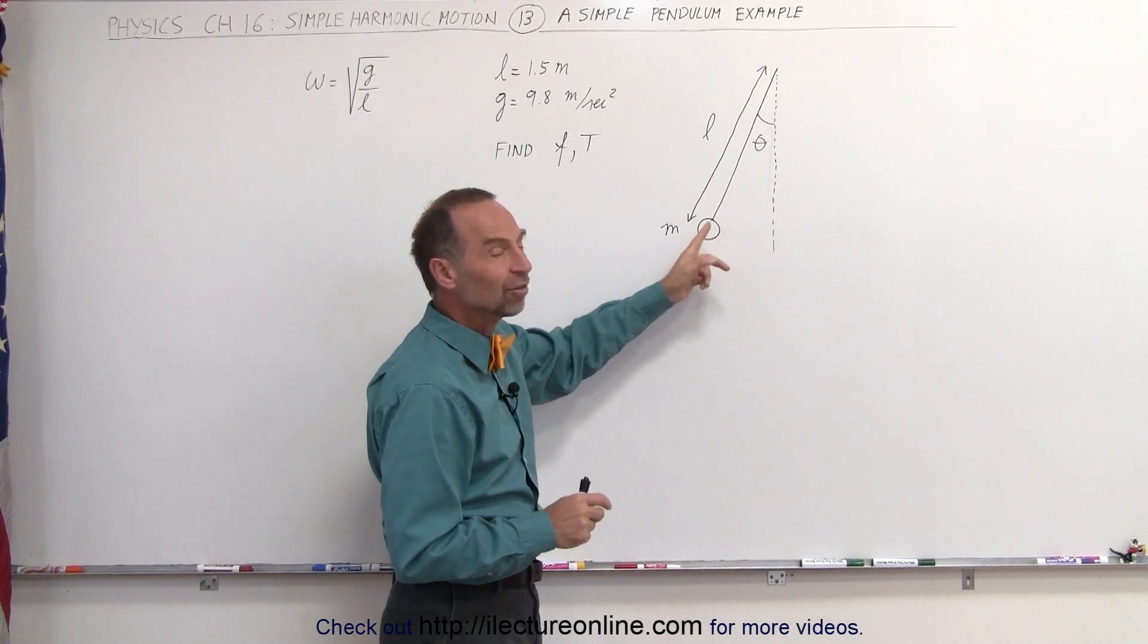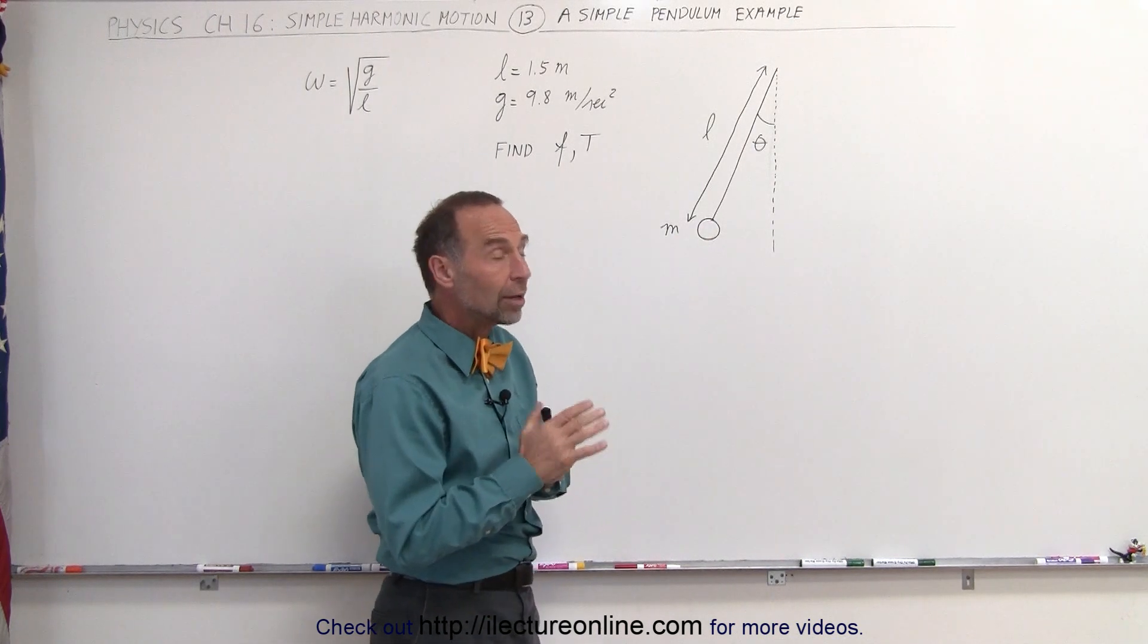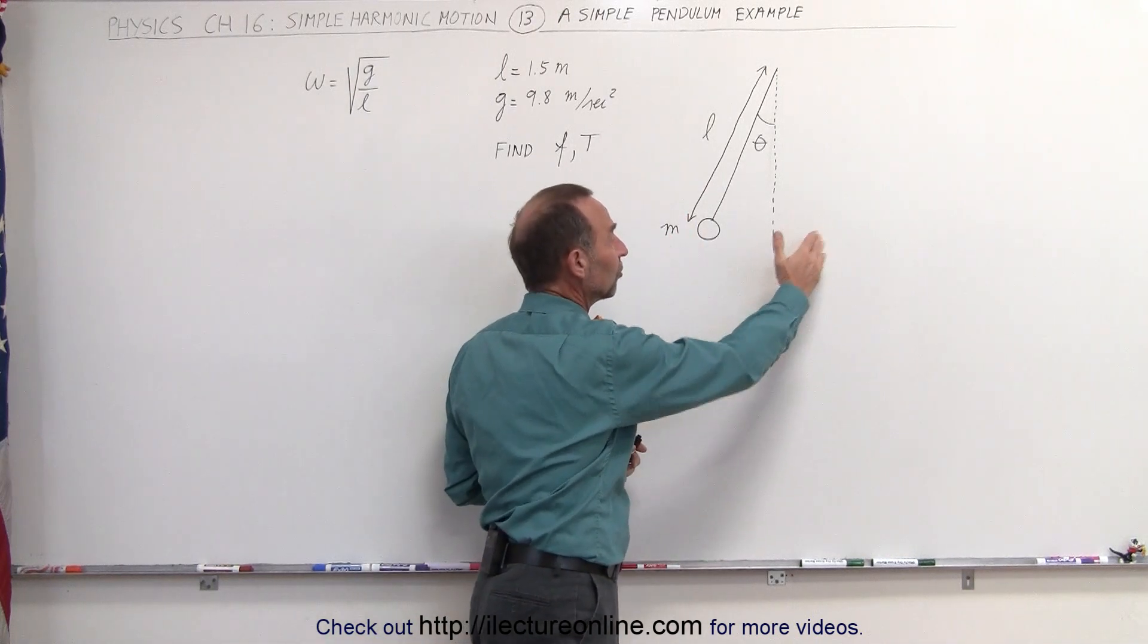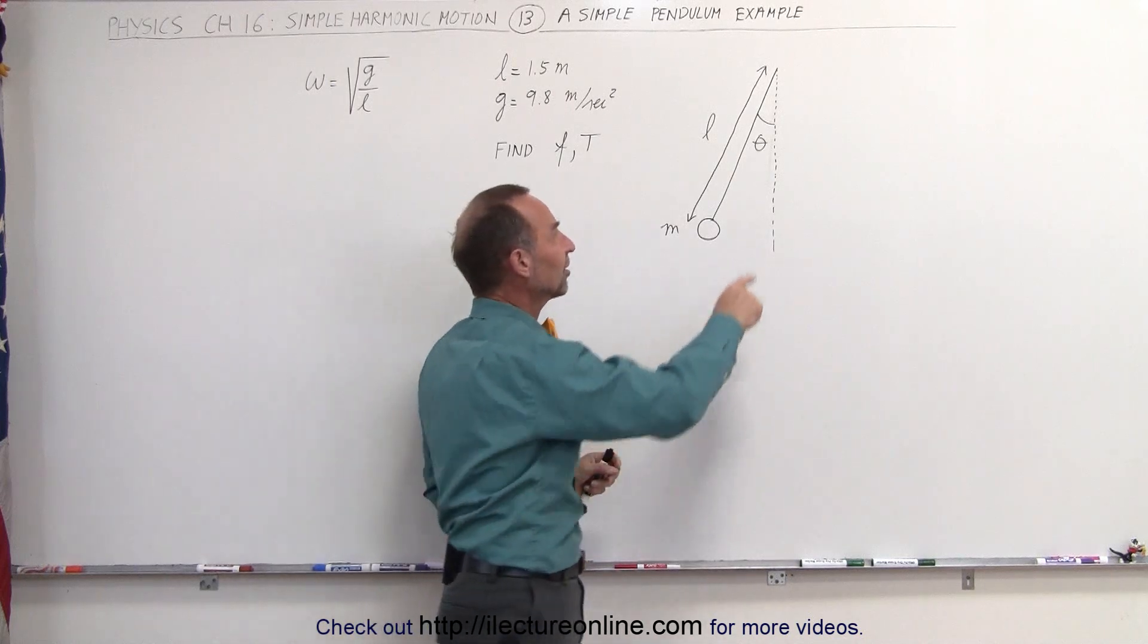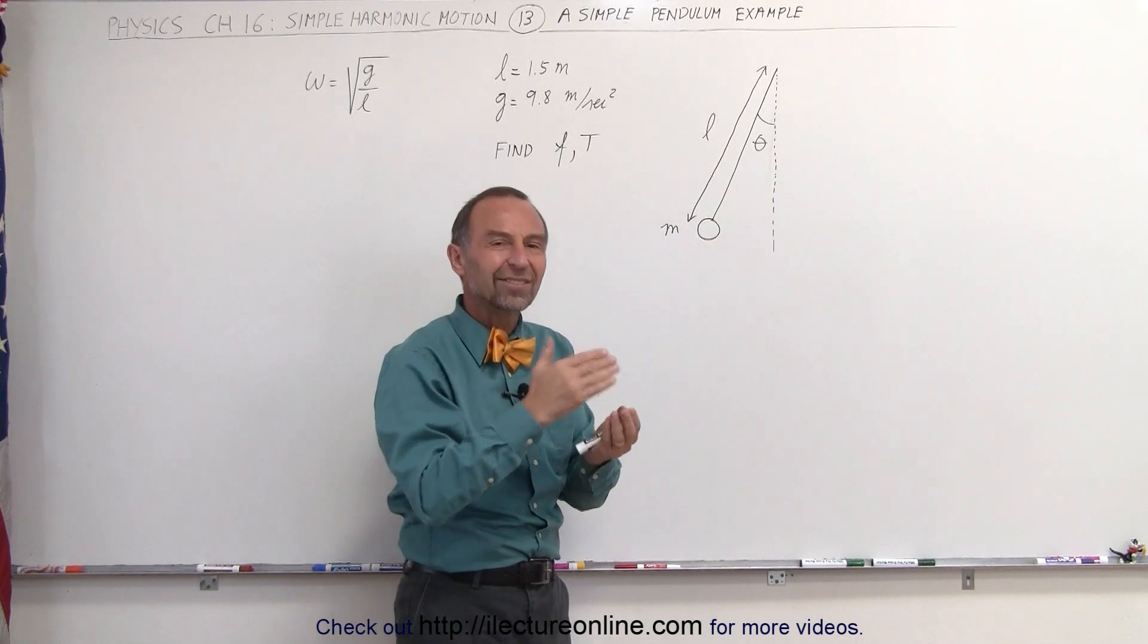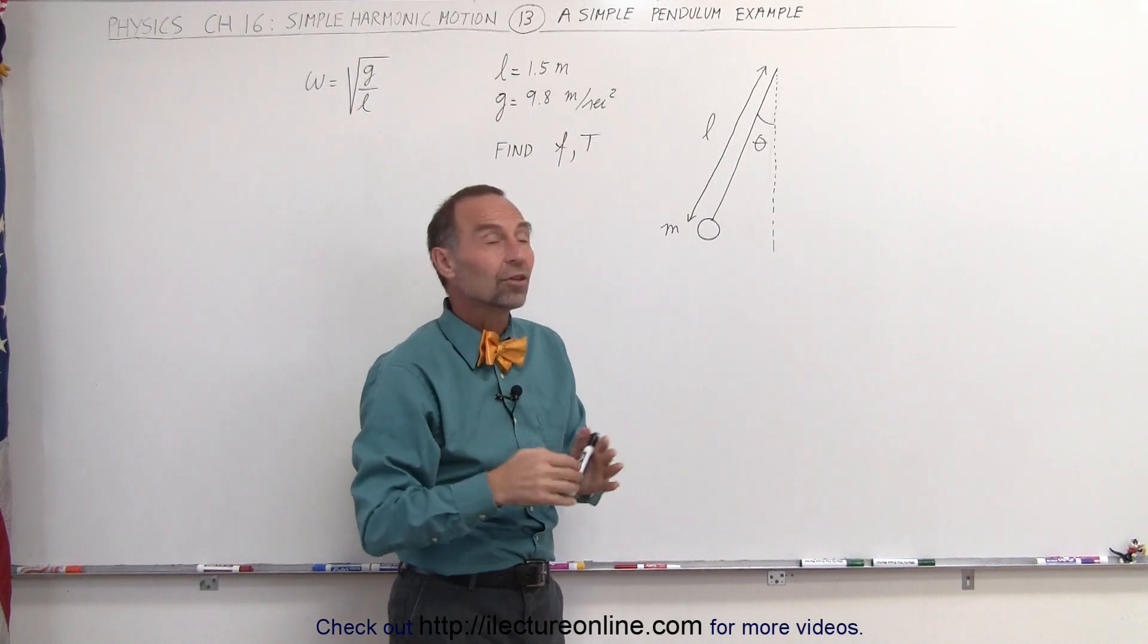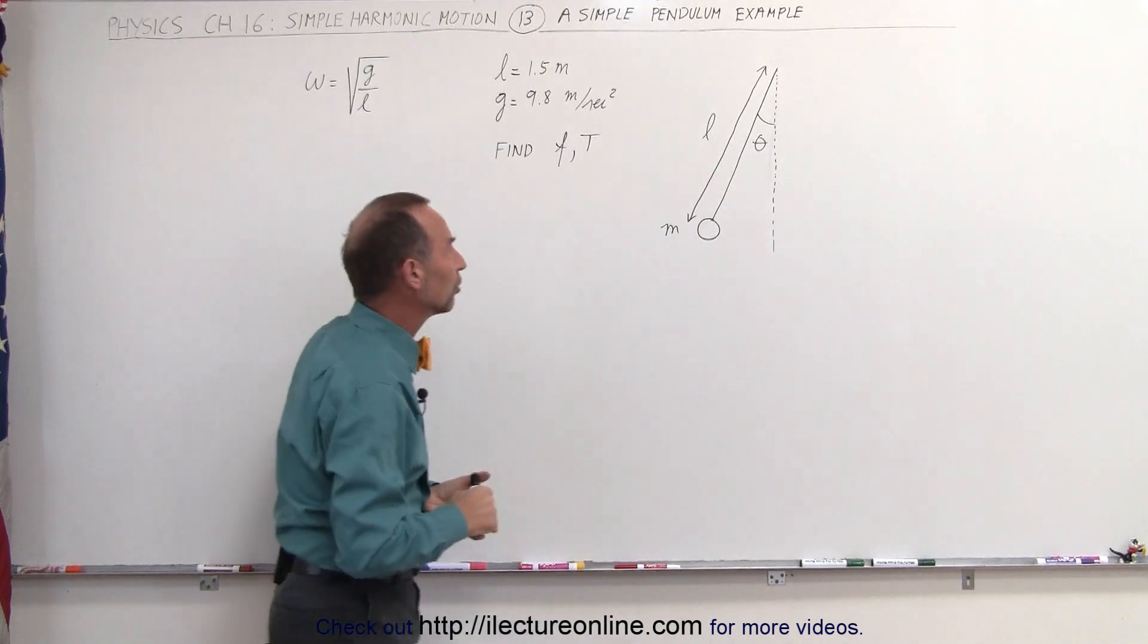The mass of the pendulum is typically the mass of the object on the rod or the string, and as long as the fluctuations, the oscillations back and forth away from the equilibrium point are small, such that the angle theta is relatively small, in other words when the sine of theta is very similar to the tangent of theta, then we can use this as an example of simple harmonic motion.